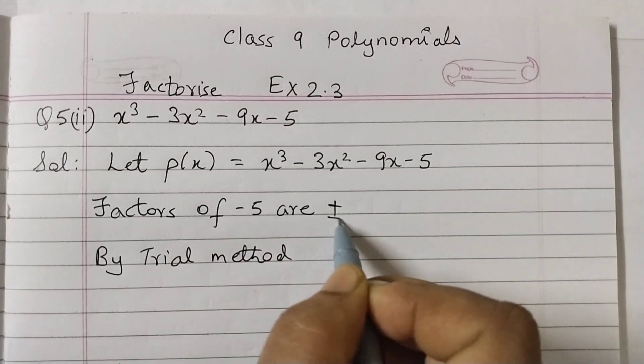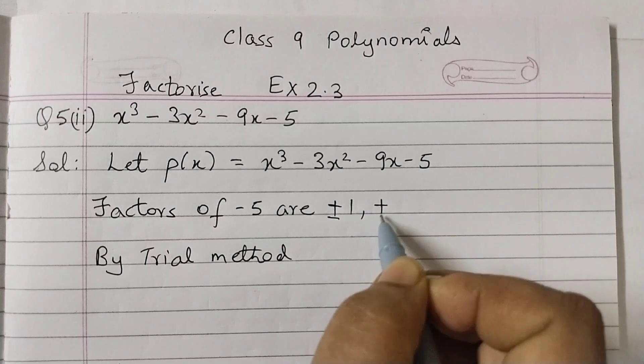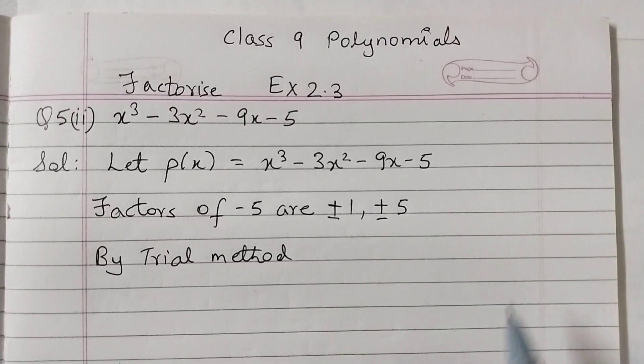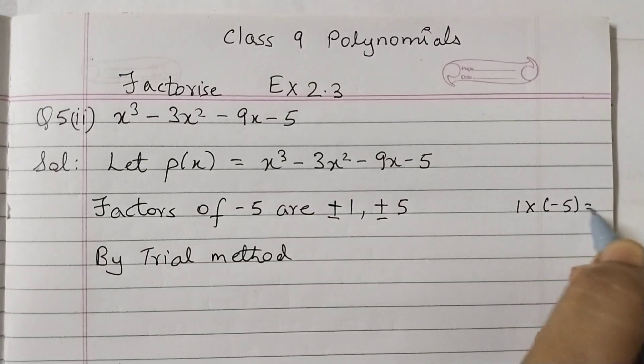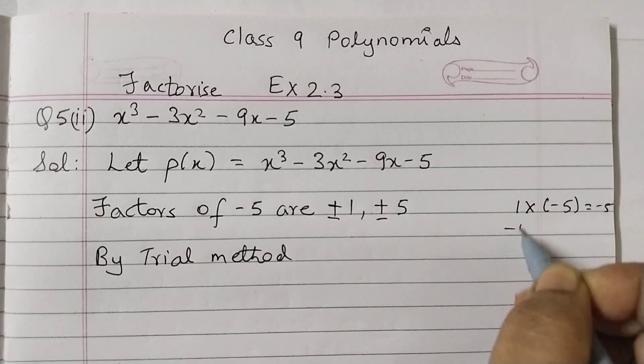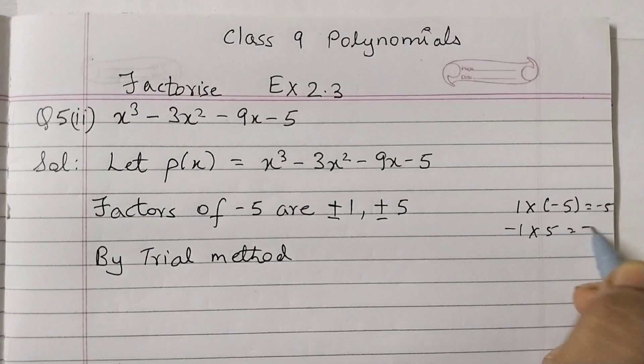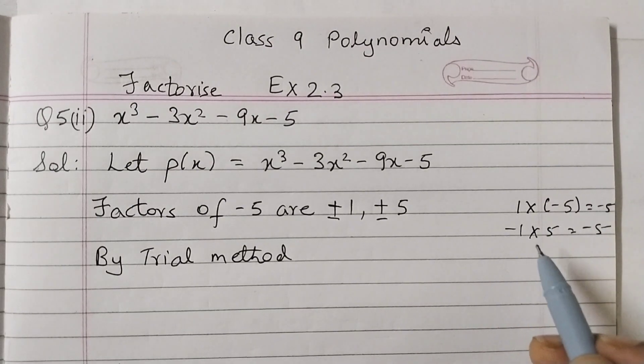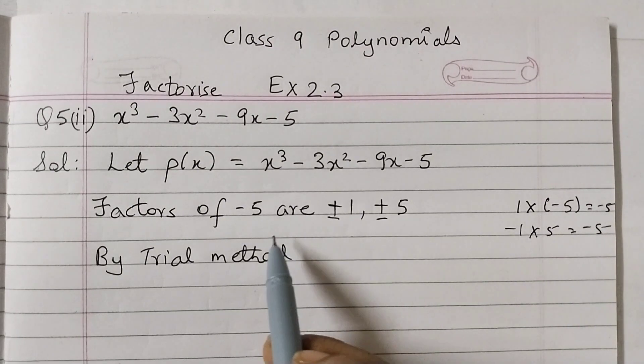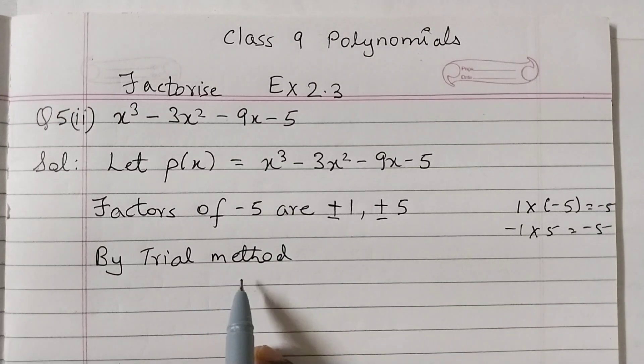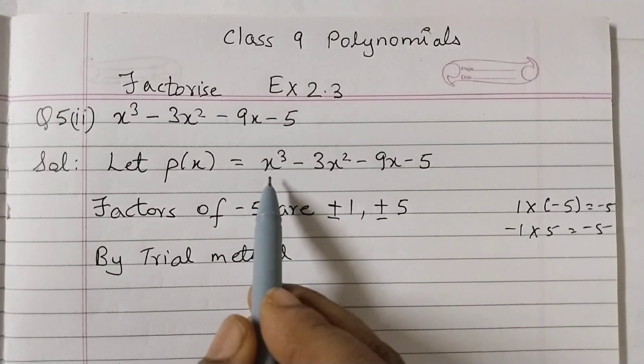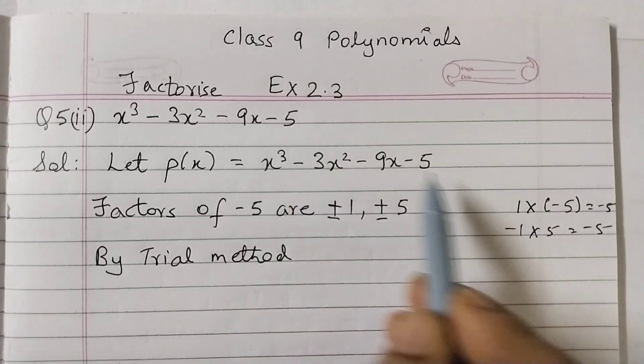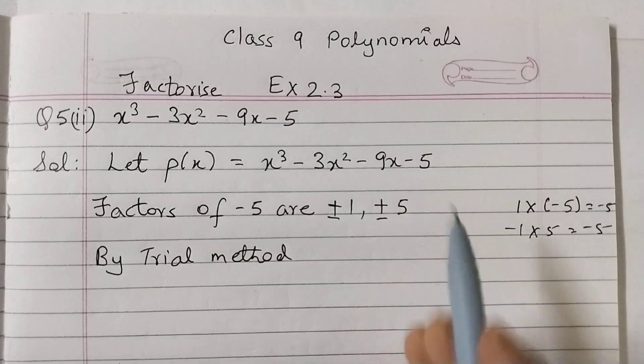That is plus or minus 1, plus or minus 5. Because 1 into minus 5 is minus 5, minus 1 into 5 is minus 5. So these are the factors of minus 5. Now by trial method, we need to check which factor when replaced here in place of x would give us 0. This whole expression will become 0.